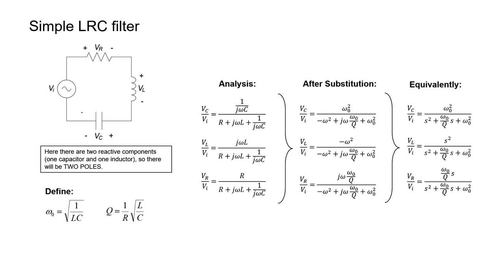The order doesn't really matter because the current is going to be the same through all of the elements since they're wired in series. In our circuit, the resistor is going to be serving as the load, so we can use the equation we've already derived. We know what the load voltage is going to be relative to the input voltage at the source. We've found a formula in terms of R, L, and C, but we've also found a formula in terms of Q and omega-naught, which were defined over here on the left. Let's take those definitions and apply them to our current problem.